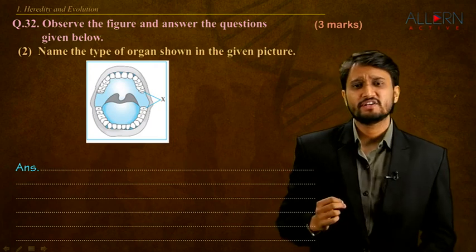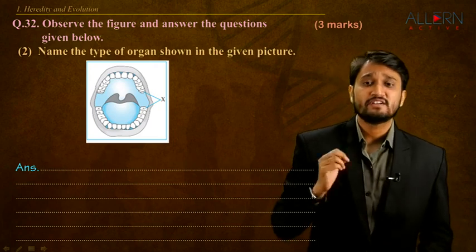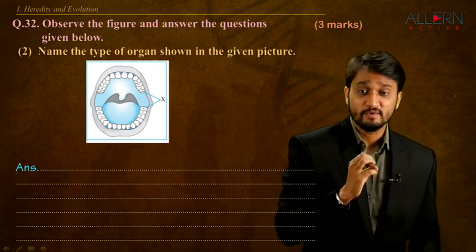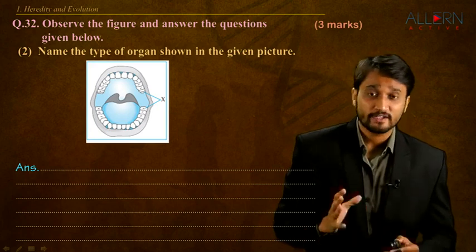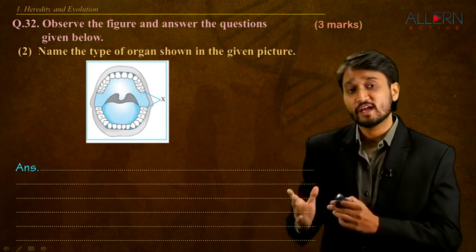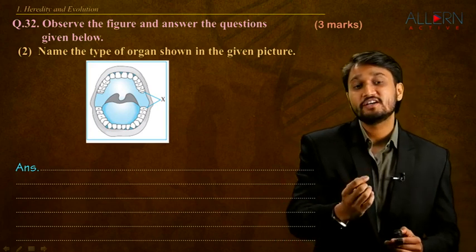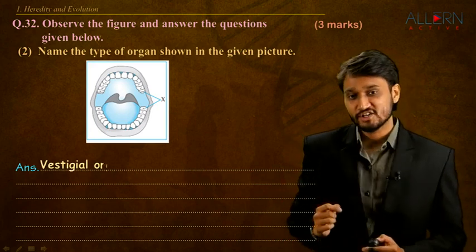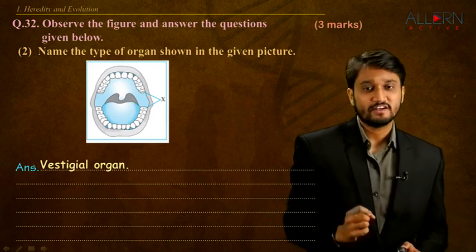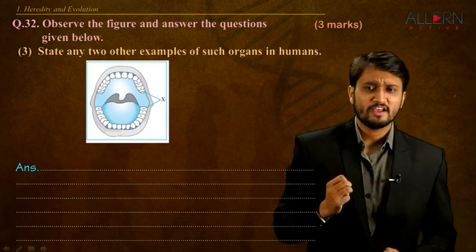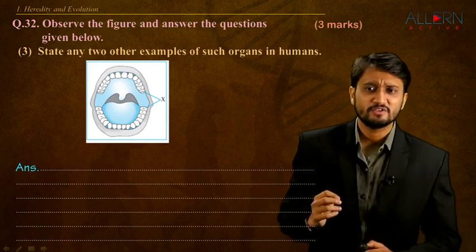Our second question is: name the type of organ shown in the given image. We know that it is a wisdom tooth, and we also know that the wisdom tooth is a vestigial organ. So that is the type of the organ.